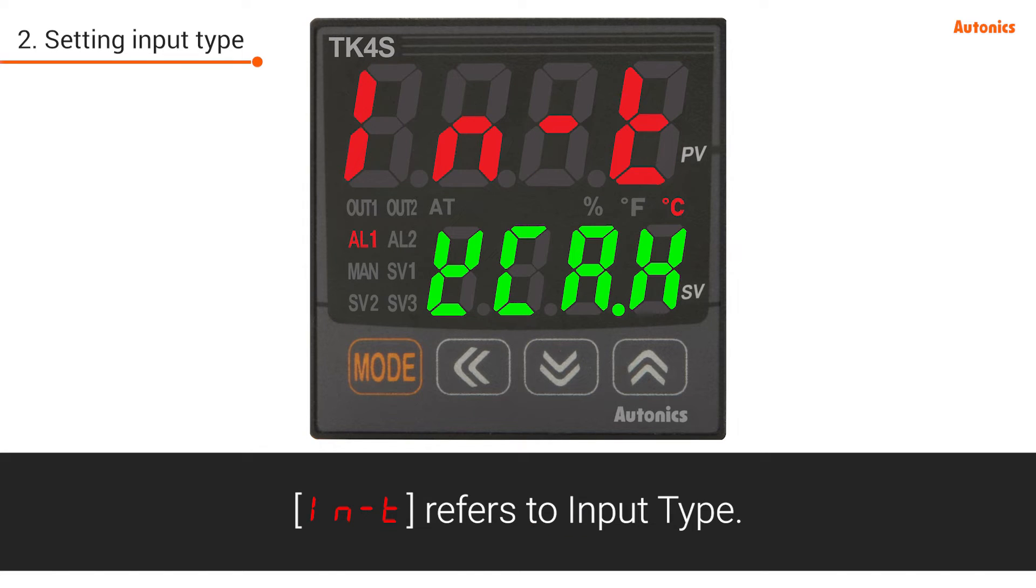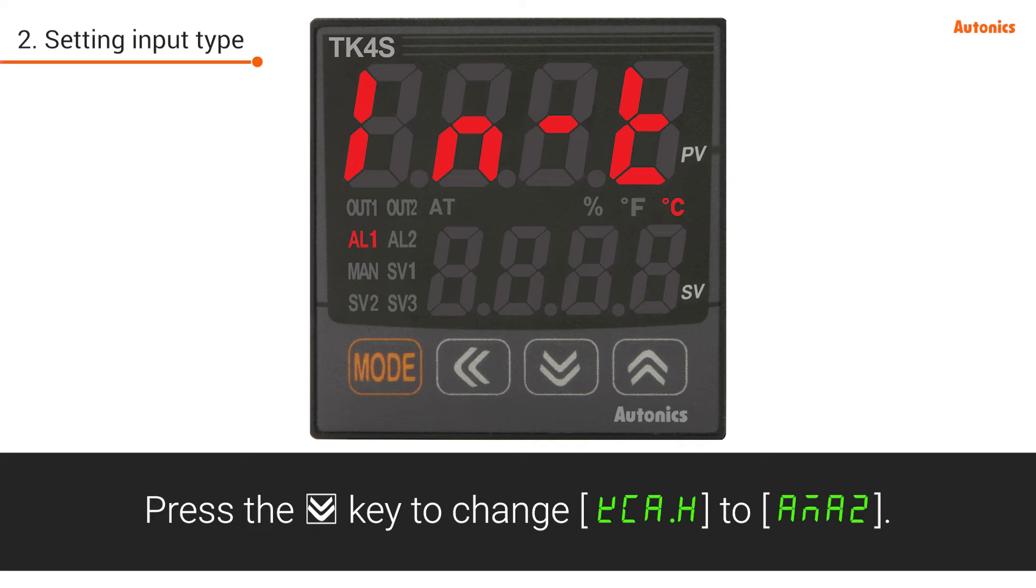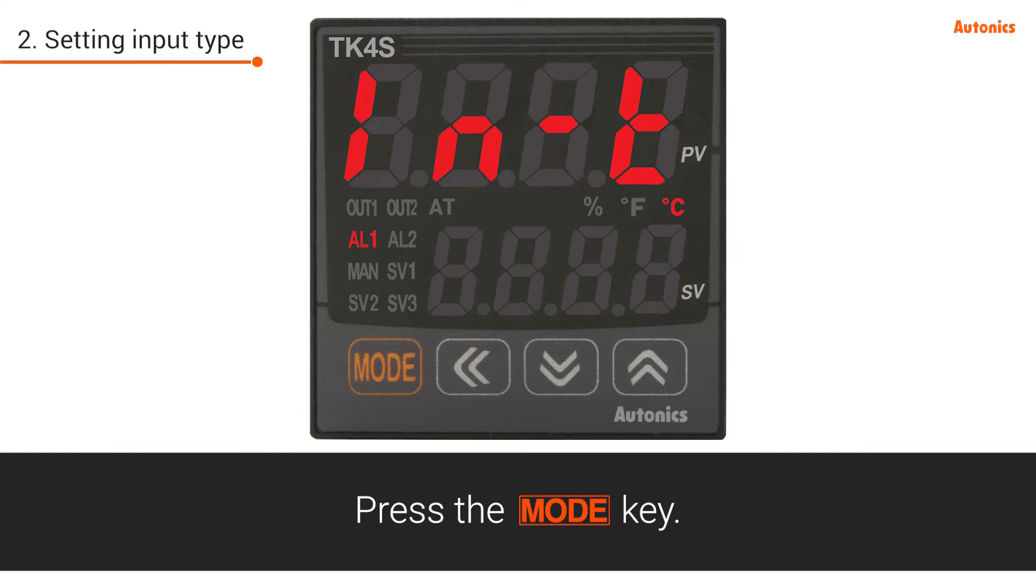IN-T refers to input type. Press the down key to change KCA.H to AMA2. Press the mode key.